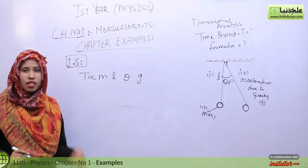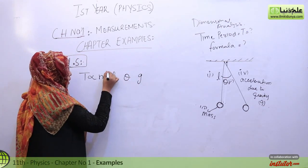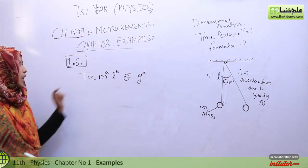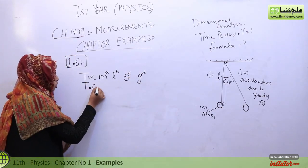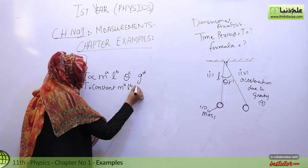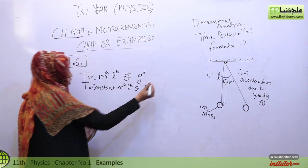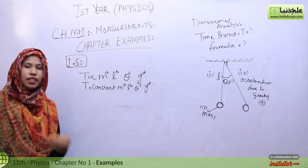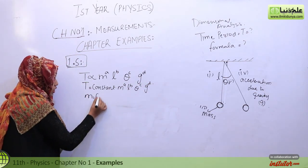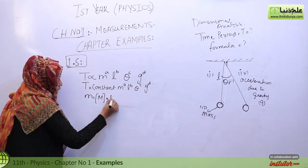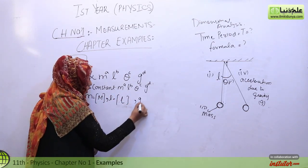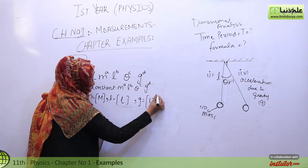For dimensional analysis, we will raise all these quantities to powers so that the formula will be easy to derive. Removing the proportionality sign, we introduce a constant: T = constant × M^a × L^b × theta^c × g^d. Now let's discuss all these factors' dimensions. M's dimension is M, L's dimension is L, and g's dimension is LT⁻² because it is acceleration.